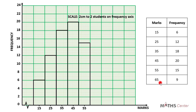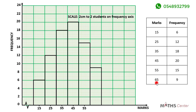And the last one is 65. The frequency is 9. So this is the bar for 65. The mark which is 65 will be at the center, on the 5th division, since the bar occupies 10 minor divisions.